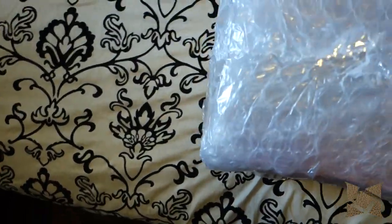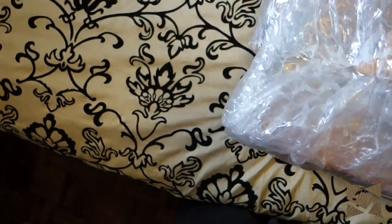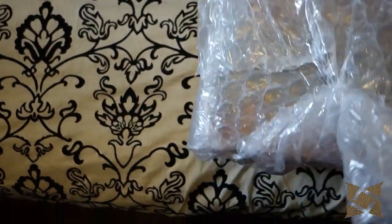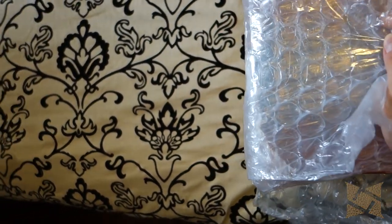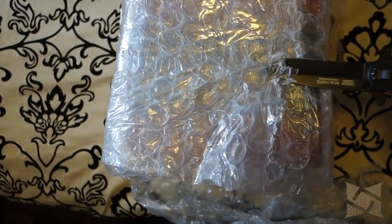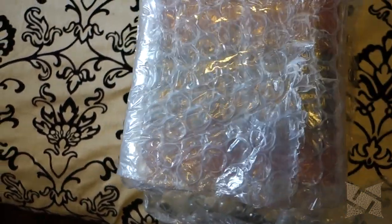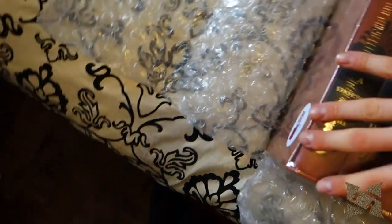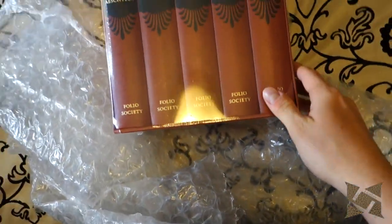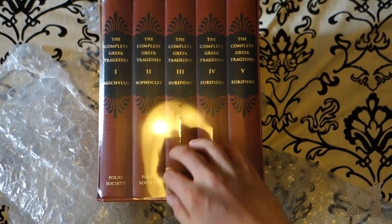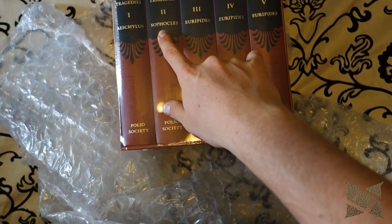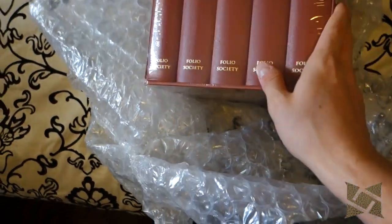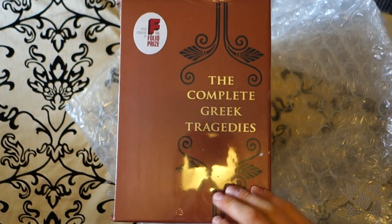There's the box. As you can see here, the complete Greek tragedies. It's sealed, so you got a five-volume set here: Aeschylus, Sophocles, Euripides, Euripides, and Euripides from the Folio Society. There is some design on the side here.